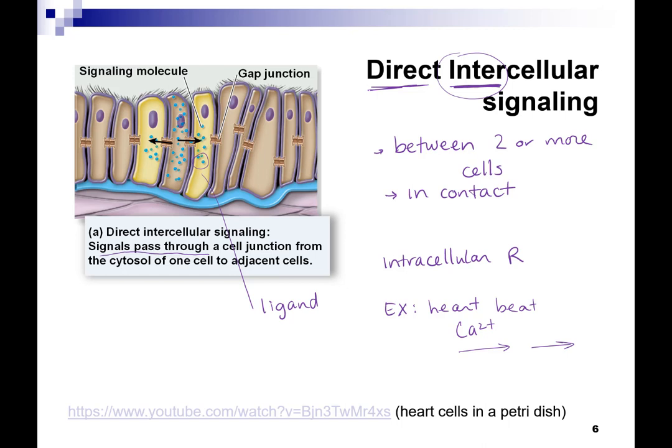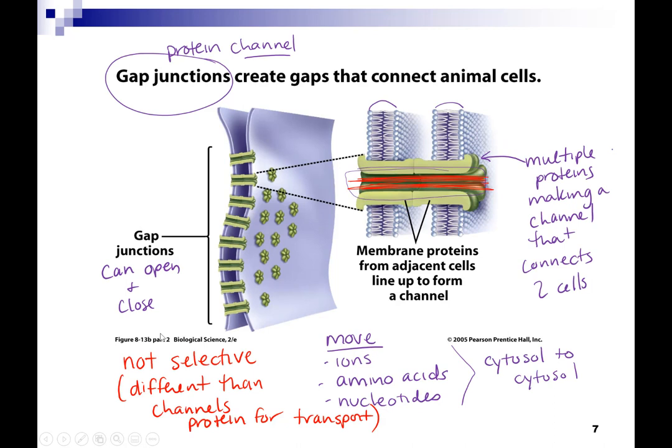The gap junction is for direct intercellular signaling — signaling between cells that are connected together and touching. Gap junctions are not selective, but rather a tunnel that can be opened and closed, and it allows small molecules to move from cytosol to cytosol between two cells.